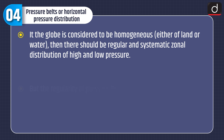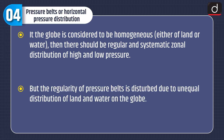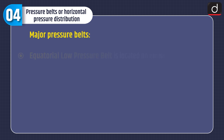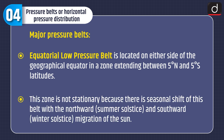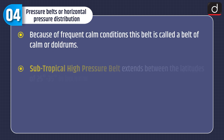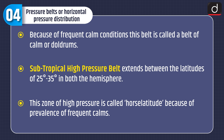Pressure belts or horizontal pressure distribution: If the globe were homogenous — either all land or all water — there would be regular zonal distribution of high and low pressure. But the regularity of pressure belts is disrupted due to unequal distribution of land and water. The equatorial low pressure belt is located on either side of the geographical equator, between 5 degrees north and 5 degrees south. This zone shifts seasonally with the northward summer solstice and southward winter solstice migration of the sun. Because of frequent calm conditions, this belt is called the belt of calm or doldrums.